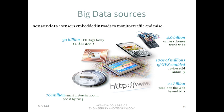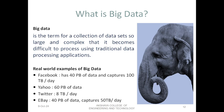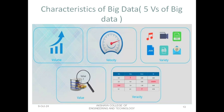Other sources of big data include sensor data. Wherever we have sensors, they continuously monitor and produce large amounts of data — for example, RFID tags, mobile phones, traffic monitoring, and CCTV cameras. Big data is the term for a collection of data sets so large and complex that it becomes difficult to process using traditional data processing applications. We can see real-world examples of how much data Facebook, Yahoo, Twitter, and e-commerce websites like eBay are generating.